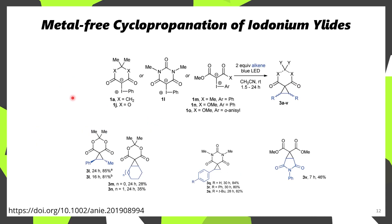Some other uses of iodonium ylids are shown here, where several different analogs were prepared from the corresponding methylene compounds, and then under photochemical conditions these pseudocarbenes were able to be added to the corresponding alkenes. In reality, this is more like a 2+2 cycloaddition followed by the elimination of iodobenzene, affording these cyclopropanes. This sort of methodology has also been reported with rhodium and copper, but this is a metal-free version, which I thought was worth noting.